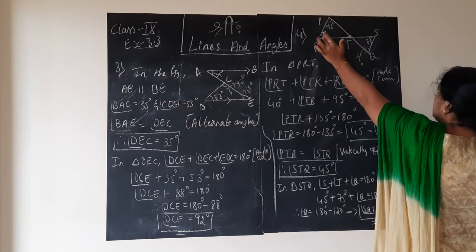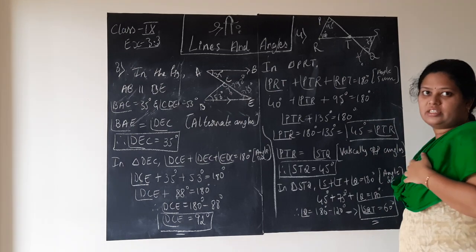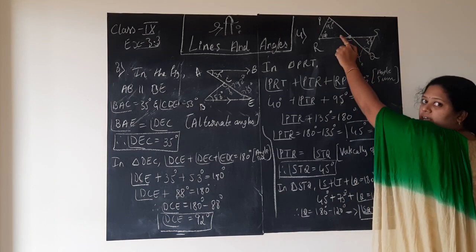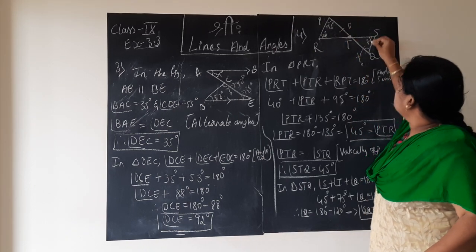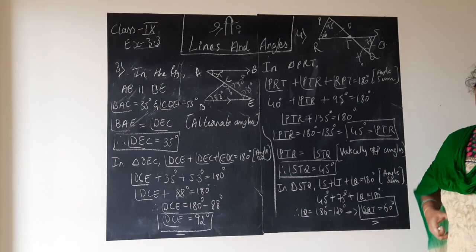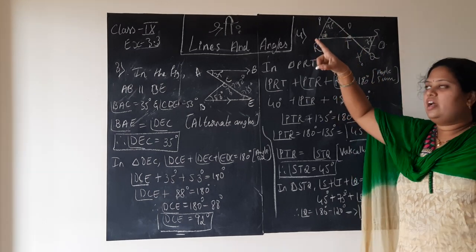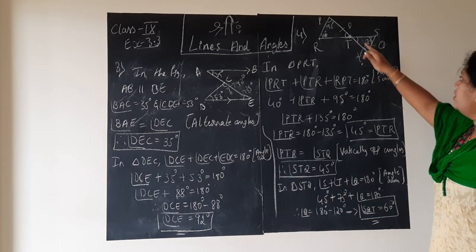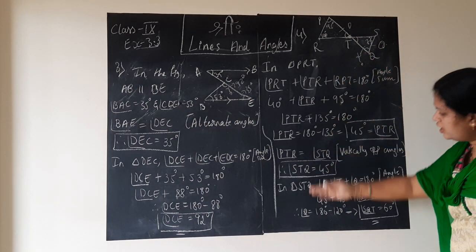First, consider one triangle. This triangle has two known angles. When we know two angles, we can easily apply the angle sum property and find the third angle. If we find angle T, this angle T is common to both triangles. Both triangles share one vertex — the top vertex, that is vertex T. If we find angle T using angle sum property for the first triangle, then the two angles at T will be equal by vertically opposite angles.